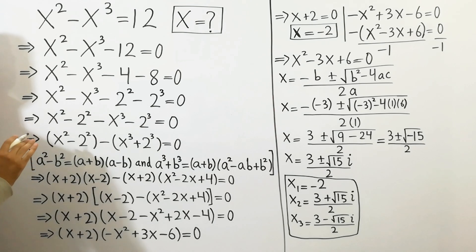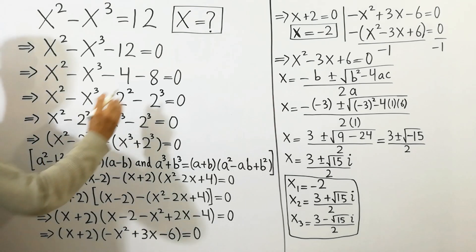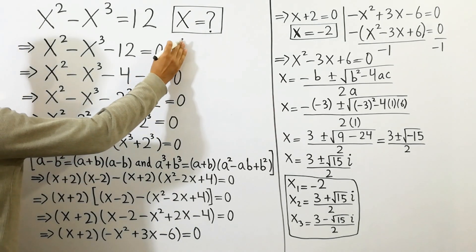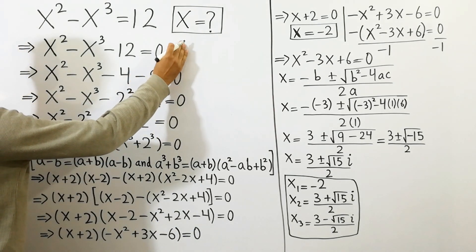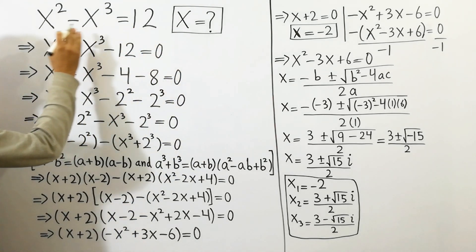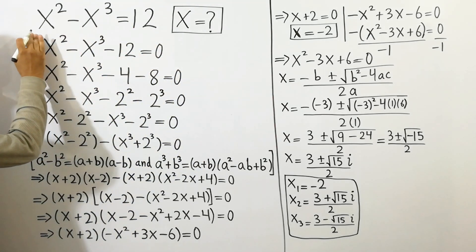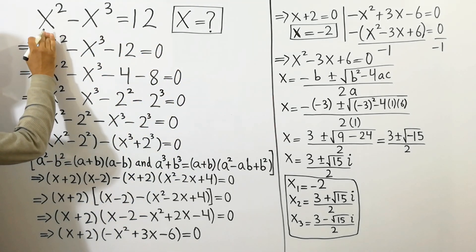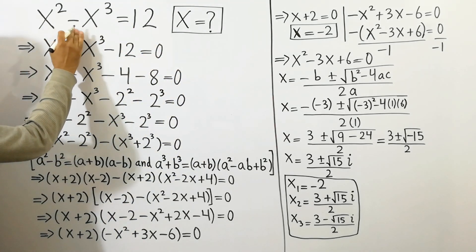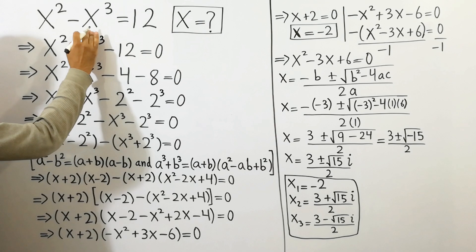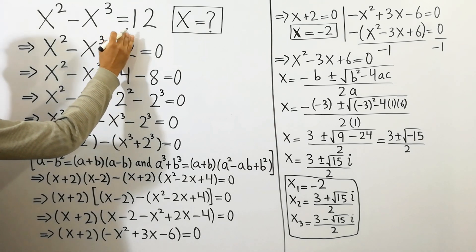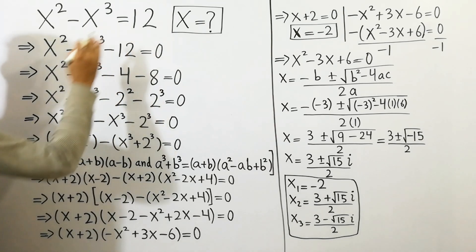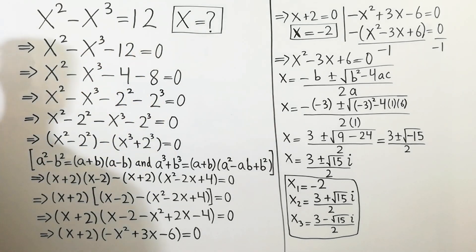Hey guys, what would be the value of x if we have an equation of x squared minus x cubed is equal to 12? Let's solve that.